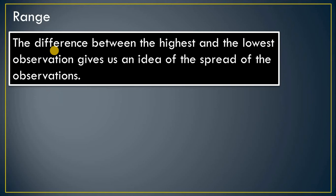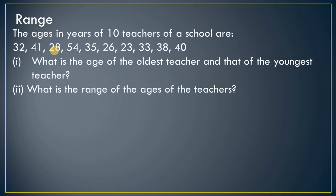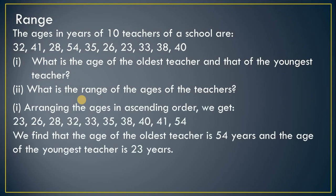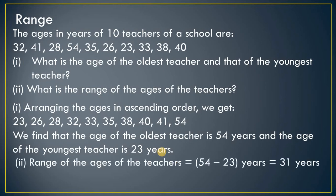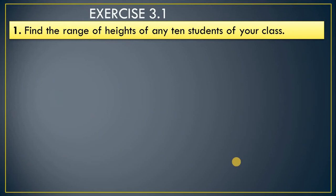Now we will see range. The difference between the highest and lowest observation gives us the range. For example, the ages in years of 10 teachers of a school: arrange the numbers in ascending order to get the youngest and oldest. Oldest is 54, youngest is 23. Range formula is highest value minus smallest value.